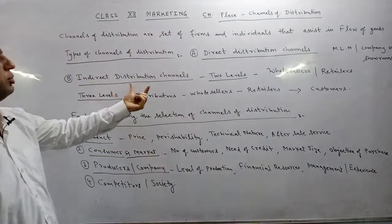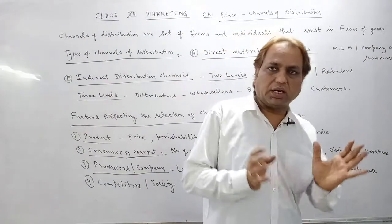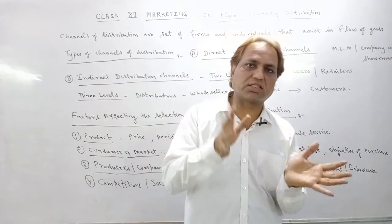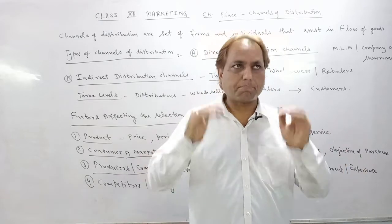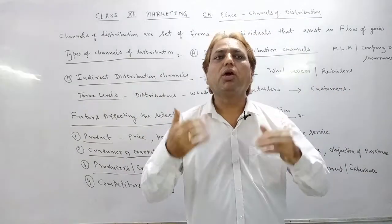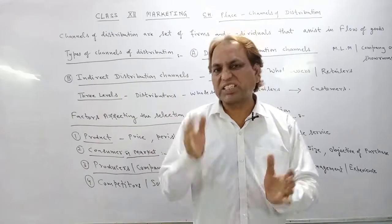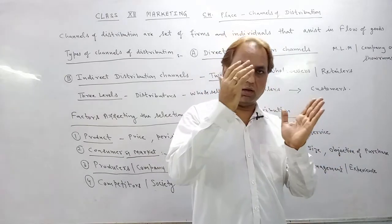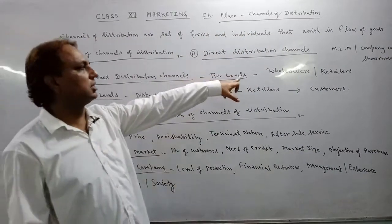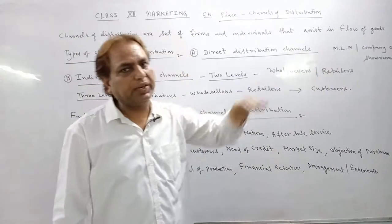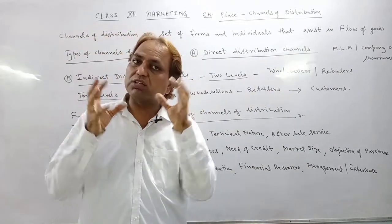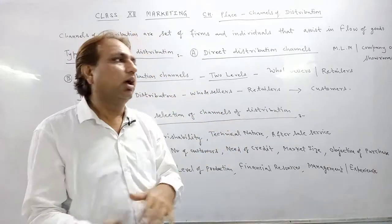The second is the indirect distribution channel. Indirect means there is involvement of middlemen — agents, wholesalers, and retailers. When a company's business is vast and it is doing mass production, the market size is large and the company cannot manage distribution itself, so it appoints agents and intermediaries to assist in the flow of goods from producer to consumer.